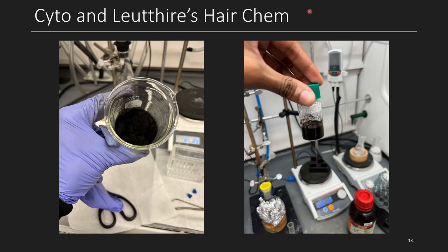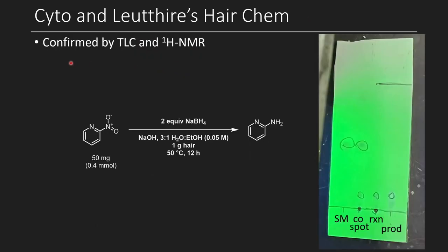In this case, instead of using brown female human hair, they actually used black hair from a human male. The reaction that Saito and Luthier tested was the reduction of 2-nitropyridine. This wasn't an example reported in the original paper, and so they thought it would be good to test this novel substrate. Using the same conditions as mentioned before, they tested out this reduction. Here you can see this first case, we just have sodium borohydride, the sodium hydroxide, water, ethanol, as well as the hair, 50°C for 12 hours, and this reduction occurs.